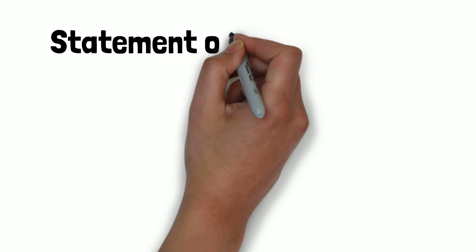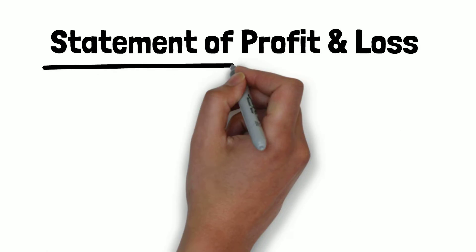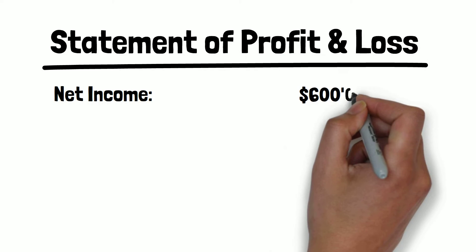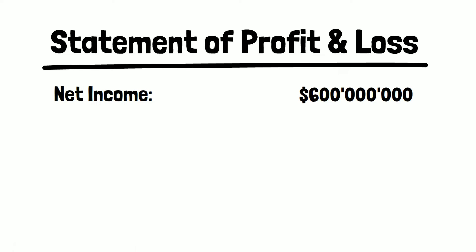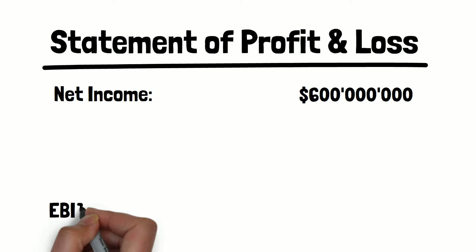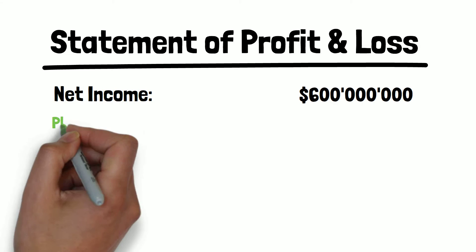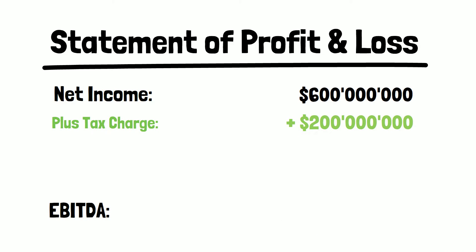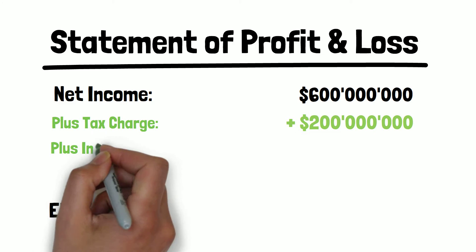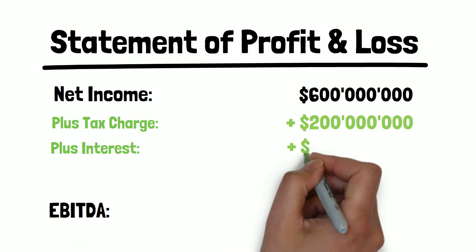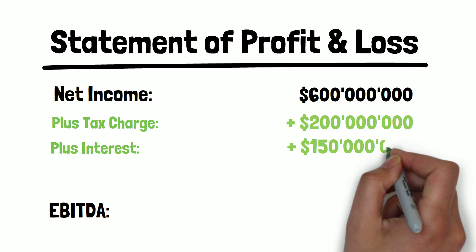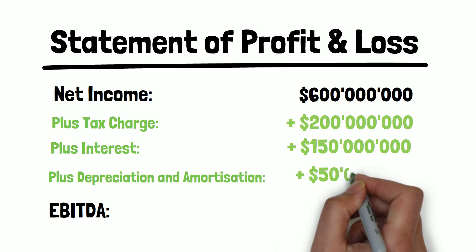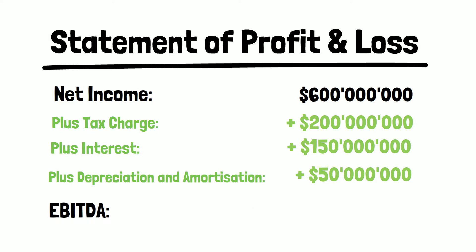If we look at the statement of profit and loss, we can see the company has a net income of $600 million. In order to get EBITDA, we have to add back the tax charge of $200 million, interest of $150 million, and depreciation and amortization of $50 million.